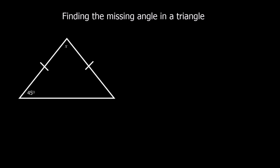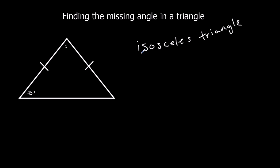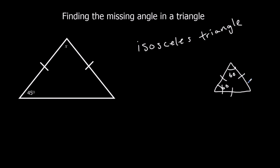This is a different type of triangle. These two lines here mean that these two lengths are equal. Whenever we've got a triangle with two equal lengths, it's called an isosceles triangle. Two equal lengths is an isosceles triangle. If we had three equal lengths — all three the same — that'd be an equilateral triangle. Each angle in an equilateral triangle is 60 degrees, because all the angles are the same and all the lengths are the same. But this is an isosceles triangle.